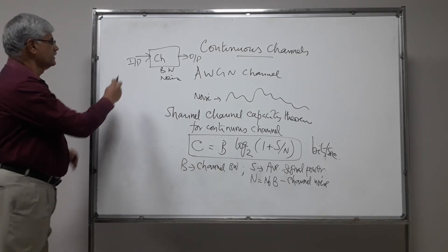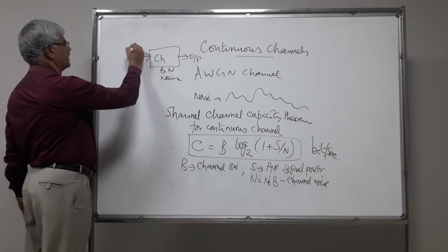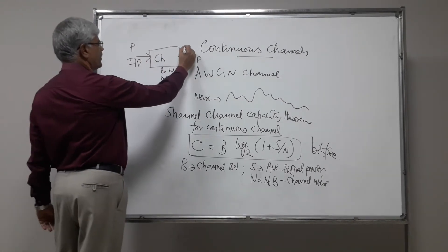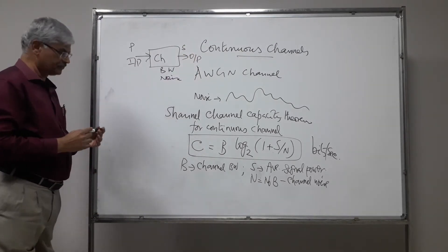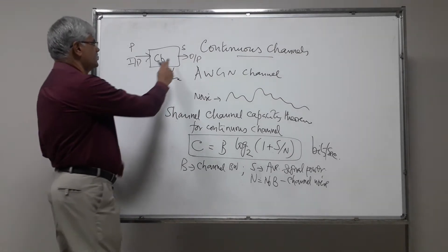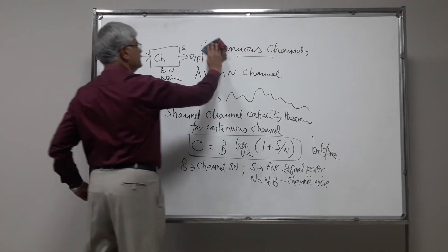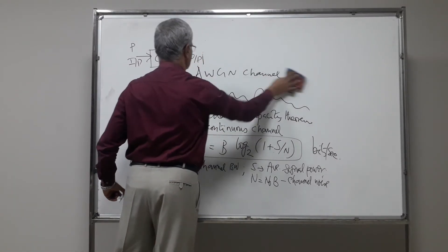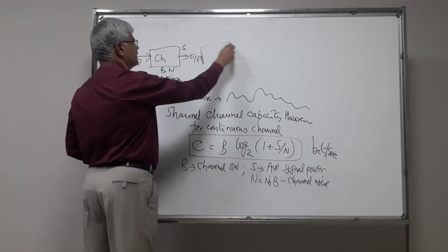And you are transmitting a particular signal, transmitting power is P, received power is S. At the output, at the input of the receiver, so this is channel output, so here there is going to be a receiver, and then output.